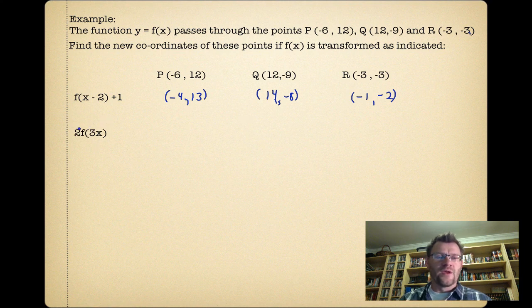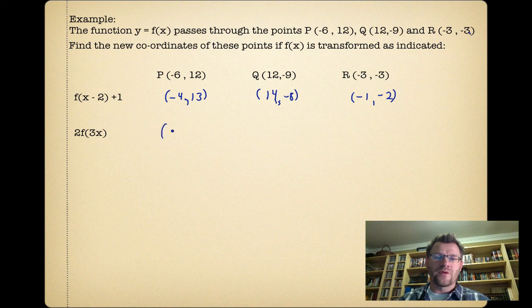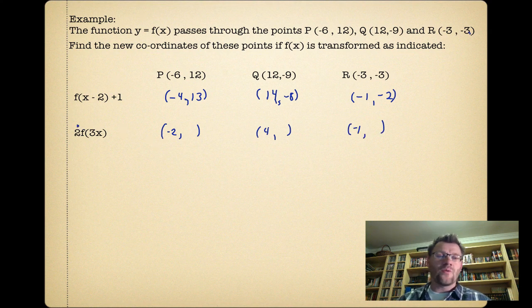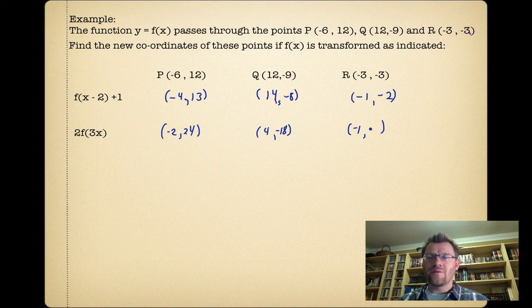For our second one, we've got our y-values being affected by a factor of 2 and our x-values by a factor of 3. But remember that in the brackets, when we have 3x, we actually divide our x-values by 3. So that makes this −2, this one positive 4, and this one −1. Now our y-values all get increased by a factor of 2, so they all get doubled: 12 doubled is 24, −9 doubled is −18, −3 doubled is −6.